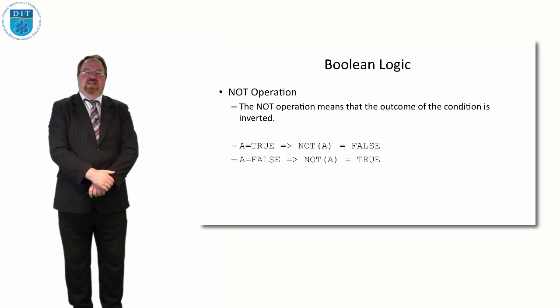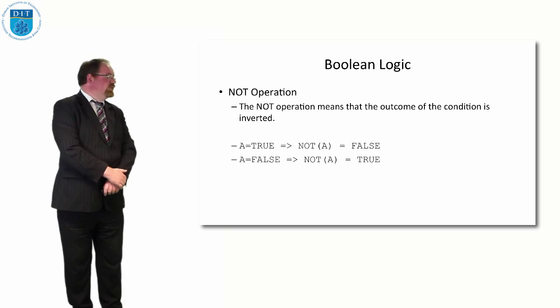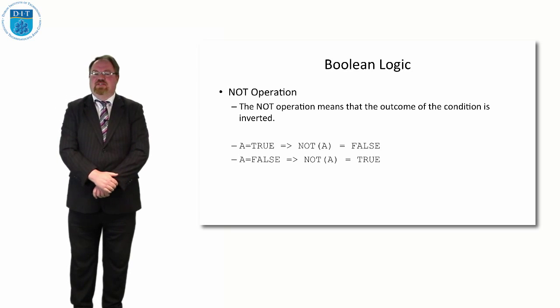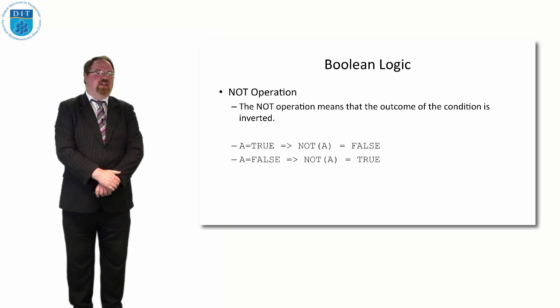And finally, our last one is NOT. So NOT means whatever the value is, it's the opposite of that. So if A is true, then the NOT of A is false. And if A is false, then the NOT of A is true.